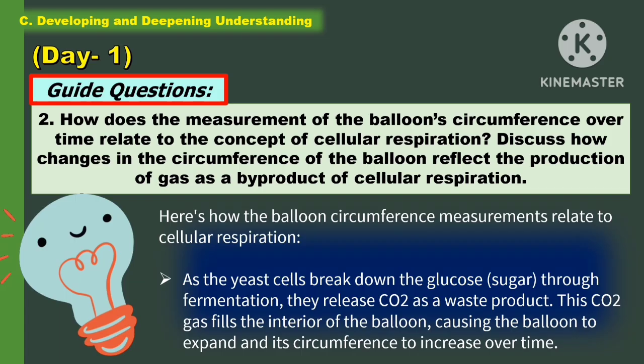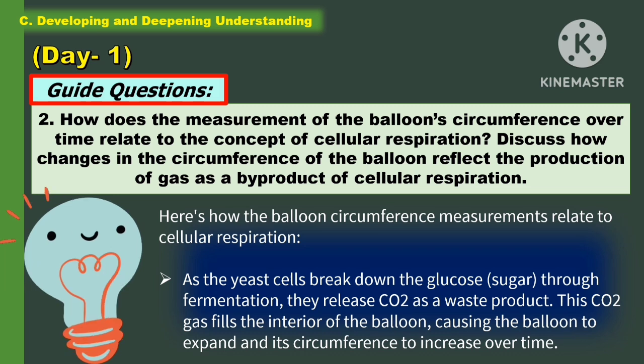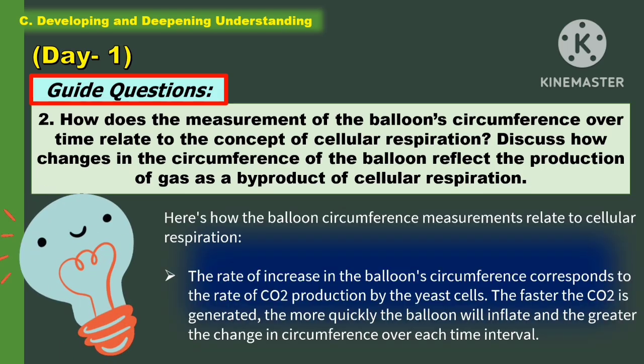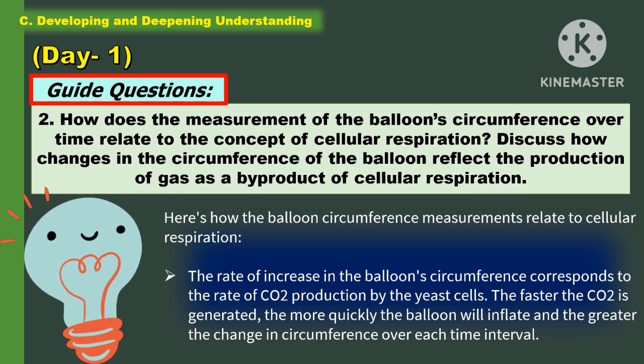As the yeast cells break down the glucose through fermentation, they release CO2 as a waste product. This CO2 gas fills the interior of the balloon, causing the balloon to expand and its circumference to increase over time. The rate of increase in the balloon circumference corresponds to the rate of CO2 production by the yeast cells. The faster the CO2 is generated, the more quickly the balloon will inflate and the greater the change in circumference over each time interval.